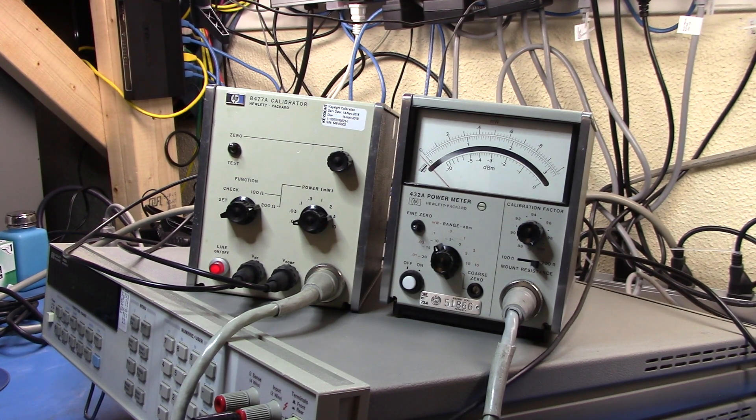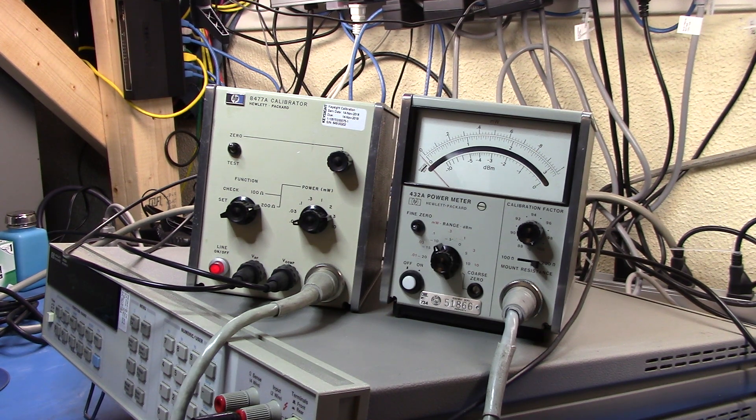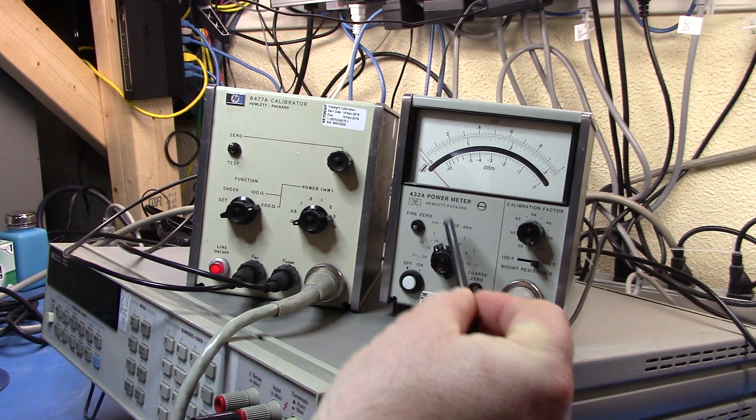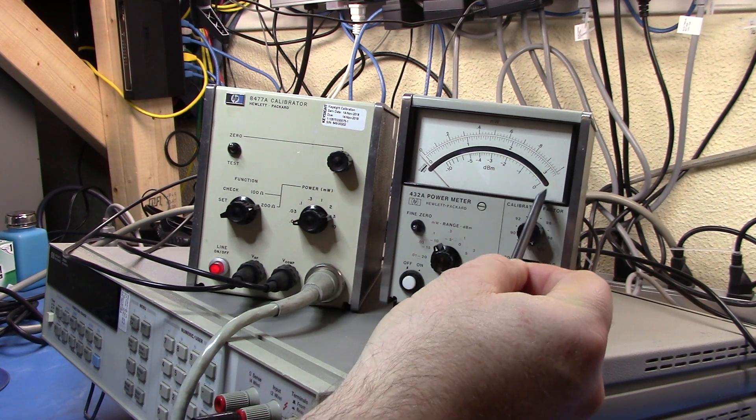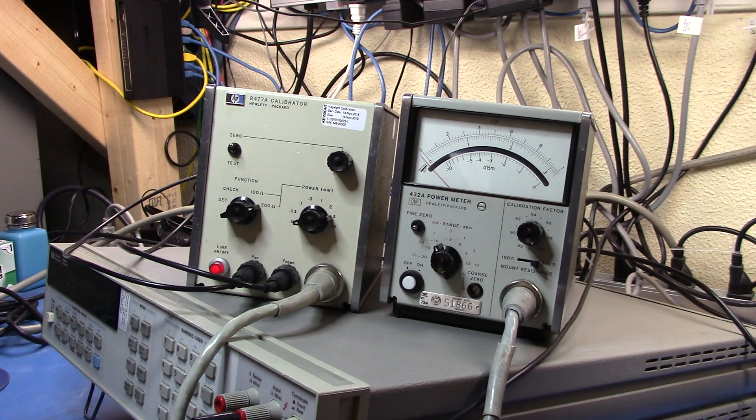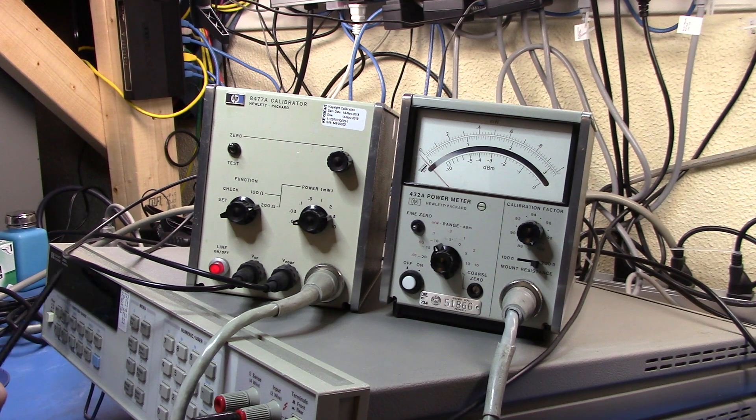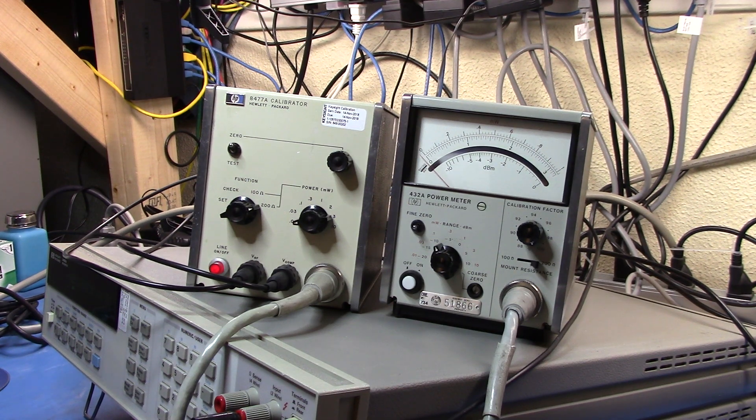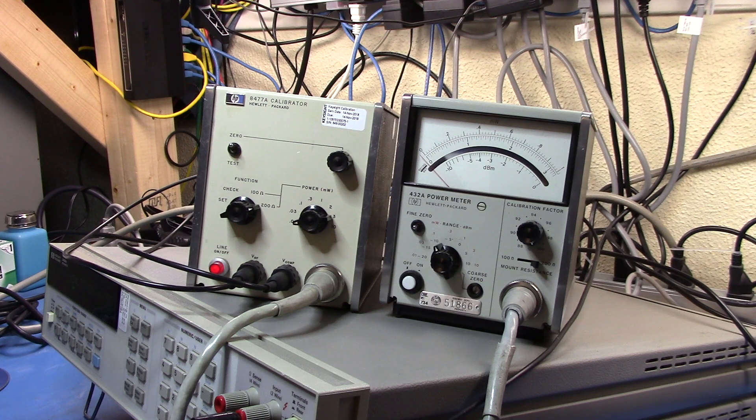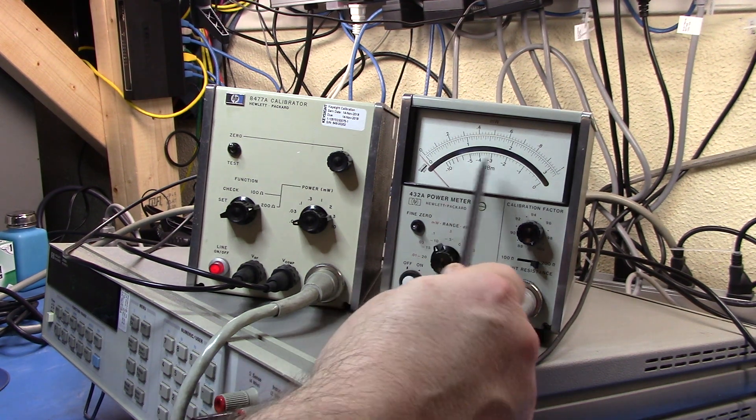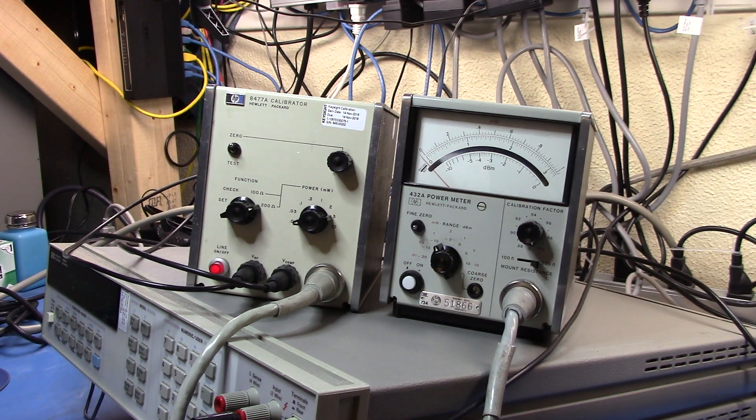The first thing we want to do is a meter accuracy test. This is going to check where the meter needle is in terms of the actual scale here and tell me what the output is. I have the 3458A here connected up so that it's reading the recorder information that's coming out of the back of the 432A. That recorder information is 0 to 1 volt depending upon where in the meter scale the needle is.